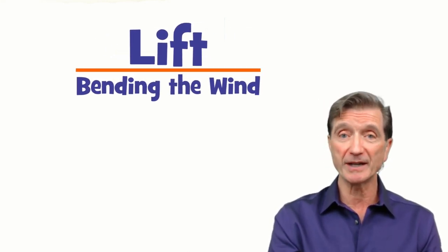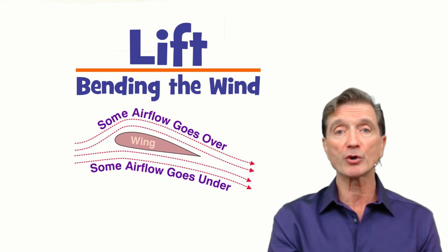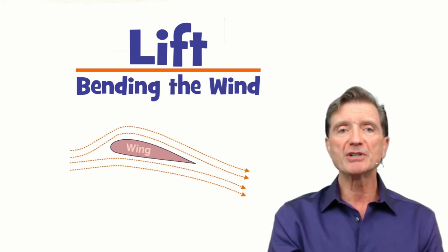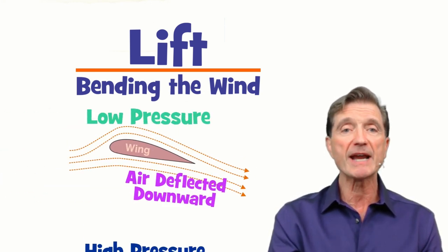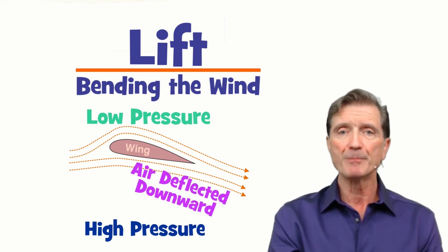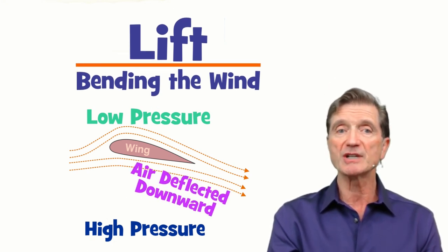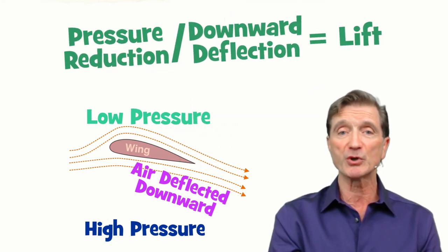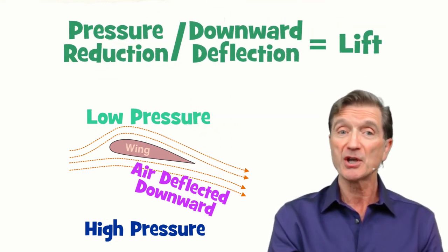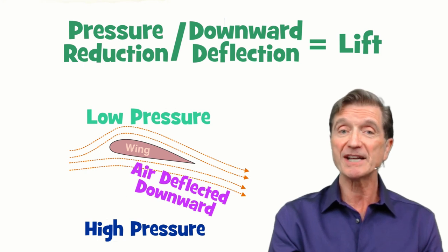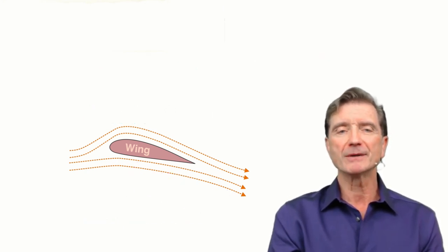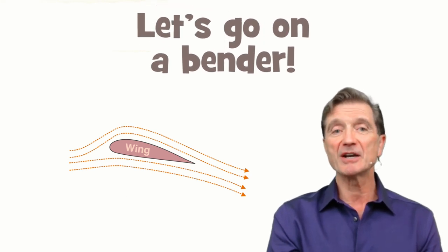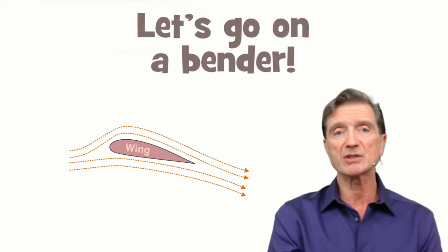Okay, I'm glad you stayed. Anytime you force the wind to bend or curve as it flows over or under a wing, you cause a reduction in pressure on its upper surface and a downward deflection of the air below and behind it. Both of these reactions — pressure reduction and deflection — are responsible for generating lift. It takes two to tango. So let's examine the details of how wind bending creates lift.